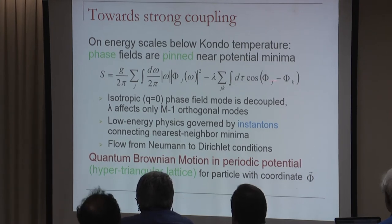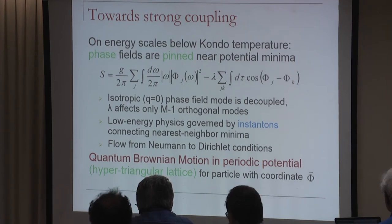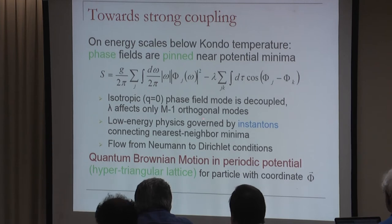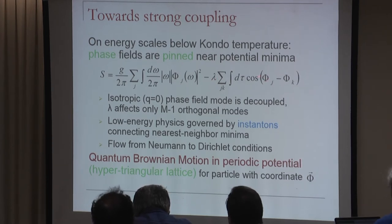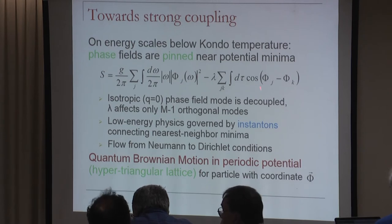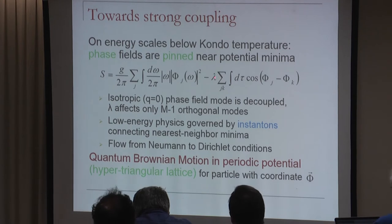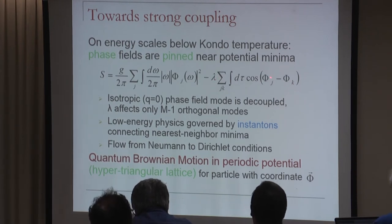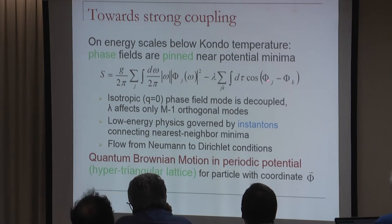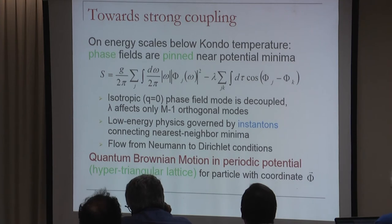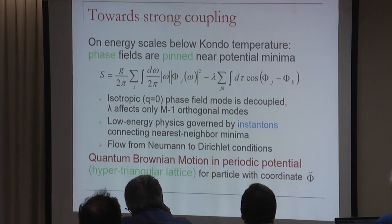Going back to the bosonic action, below the Kondo temperature the RG equations are no longer valid (they were perturbative). As lambda grows, the fields try to get pinned at the minima of the periodic potential—quantum Brownian motion in a hyper-triangular lattice potential. At lambda to infinity, you freeze the fields at potential minima. However, the isotropic phase field mode (sum of all phi's) is decoupled and fully fluctuating; lambda only affects the M-1 orthogonal modes.